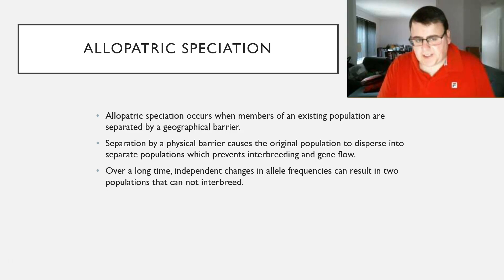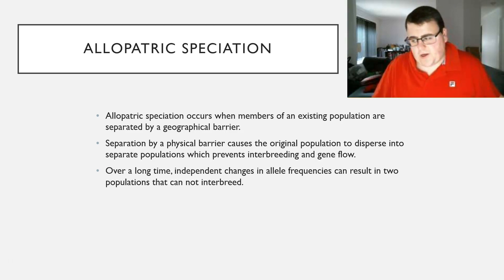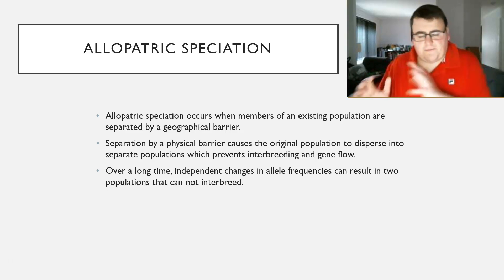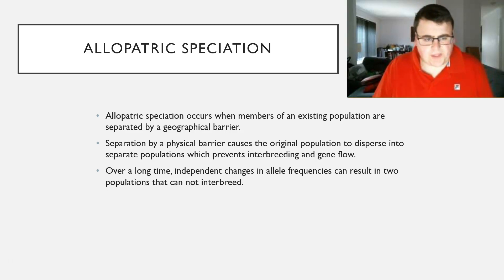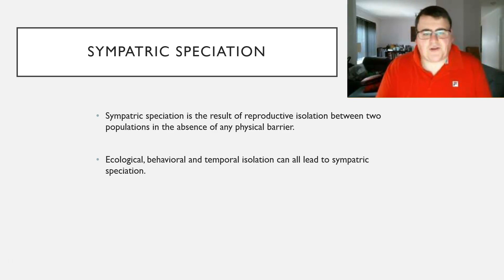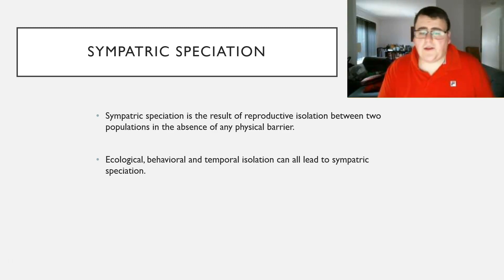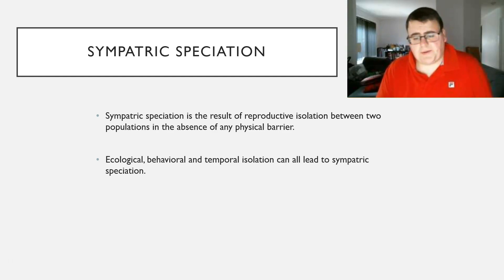So, allopatric speciation: separated by a geographical barrier, preventing them from interbreeding, and over lots of time they haven't interbred, their genes have evolved to suit them best, and they become two separate species. Our next form is sympatric speciation. That's the result of reproductive isolation between two populations — there's no physical barrier; the species just can't interbreed with each other. You could have ecological isolation, behavioural isolation, or temporal isolation. All of those processes we looked at in the last PowerPoint lead to sympatric speciation.